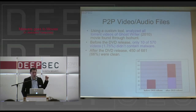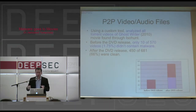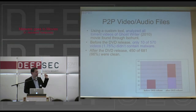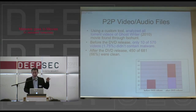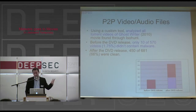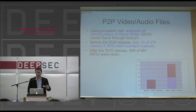I did a study of my own. I have a custom tool that downloads video torrent files piece by piece and checks if the video contains any malicious scripts. I took one movie called 'The Ghost Writer' by Roman Polanski. Before the DVD release, 10 out of 570 videos didn't contain malware — meaning only 1.75% were clean, and almost 98% of videos found online were malicious. After the DVD release, when it became much easier to copy, the statistics improved: 66% of the videos were clean, but 44% were still infected on torrent sites.